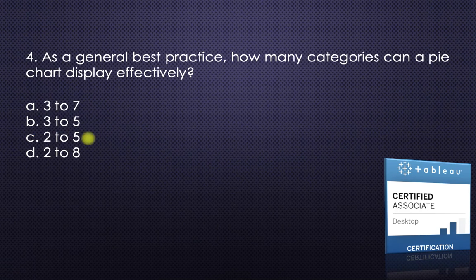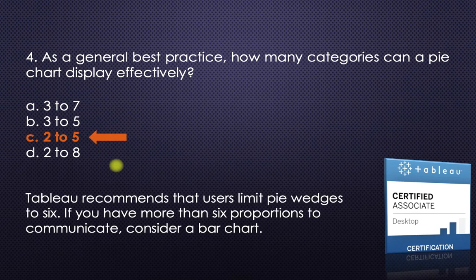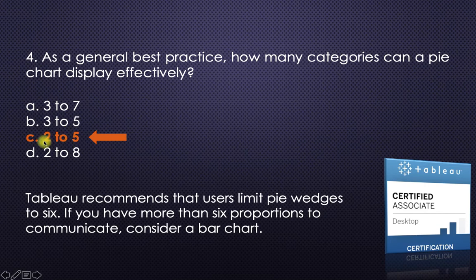The fourth question: as a general best practice, how many categories can a pie chart display effectively? Tableau recommends no more than five categories. The options include 'two to five' and 'three to five' — since two categories is also fine, the answer is two to five. Once it reaches six, Tableau does not recommend using a pie chart.